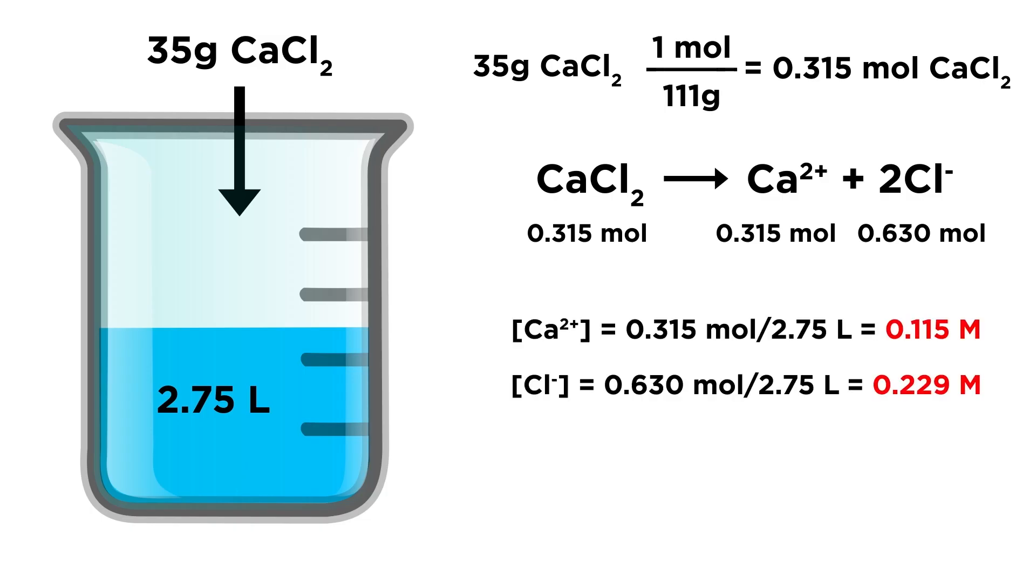Now we can divide these values by the volume, 2.75 liters, and we get 0.115 molar as the calcium ion concentration, and 0.229 molar as the chloride ion concentration.